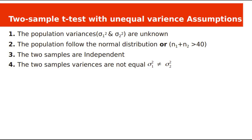The assumptions for the unequal-variance two-sample t-test are: population variances sigma1 and sigma2 are unknown; the populations follow a normal distribution, or N1 plus N2 is greater than 40; the two samples are independent; and the two sample variances are not equal, meaning sigma1 squared is not equal to sigma2 squared.